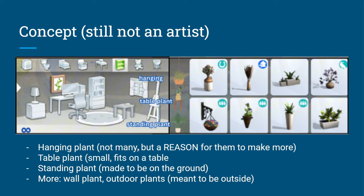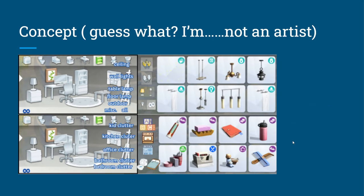I want more hanging plants. Then I want a subcategory for table plants — small plants that fit on a table — and standing plants, which are made to be on the ground. I also want wall plants and outdoor plants, because some are meant to be outside.